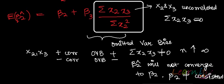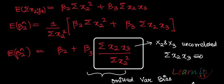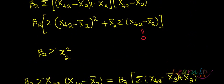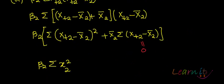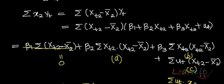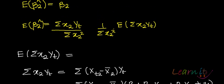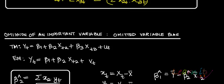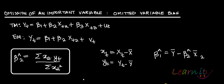So this was the lecture on omitted variable bias. The best way to approach it is to listen to the recording first, then listen again and make notes side by side.